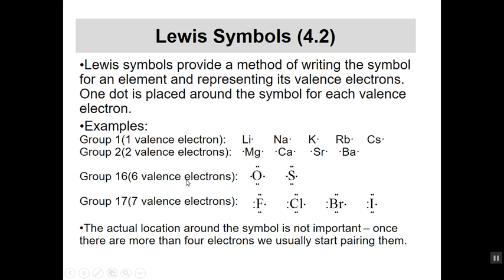One of the ways we can streamline this and help visualize is we draw something called Lewis symbols, named after G.N. Lewis, who was a big contributor to bonding theory. We take and write the element symbol, and then we draw a dot to show us how many valence electrons it has. It doesn't matter where the dot is. Here's my symbol, here's how many valence electrons I've got. Notice in group 17 they have seven valence electrons. What it helps you do is visualize what they have to do to get to an octet.